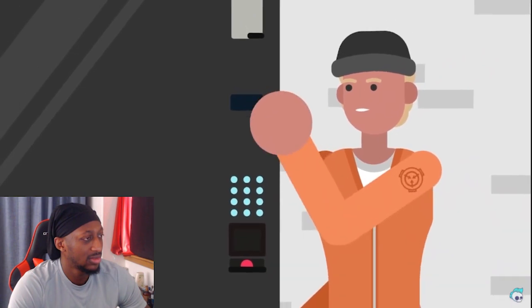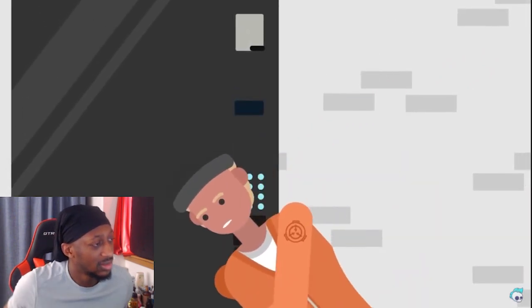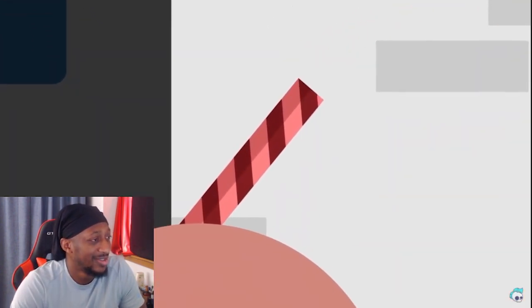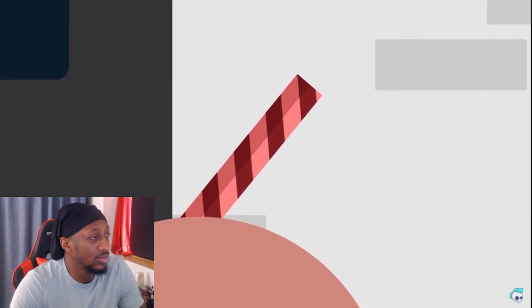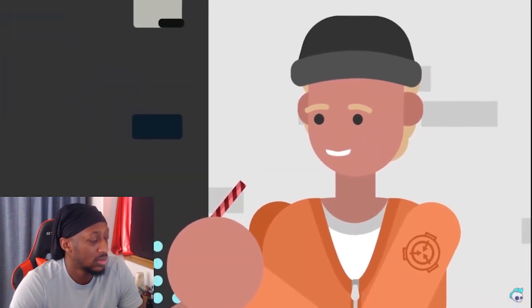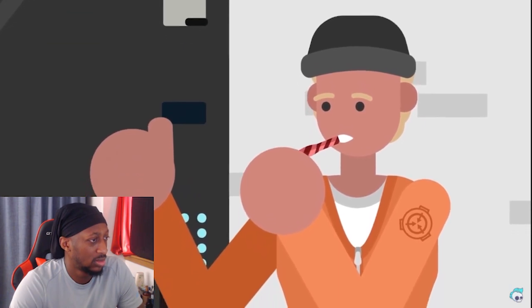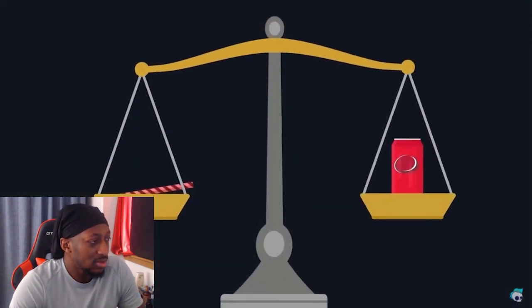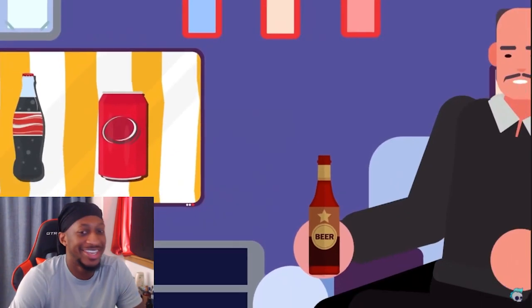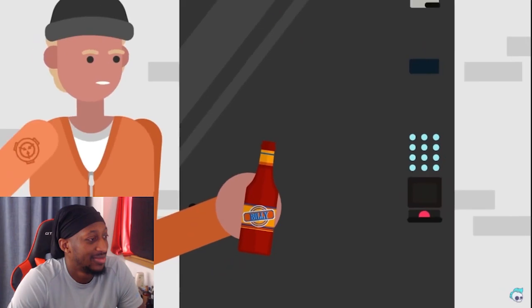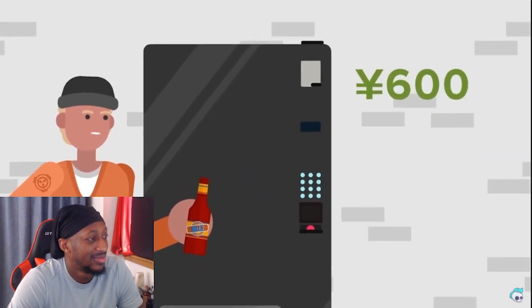But not everybody likes cola. Maybe you prefer Dr Pepper. In which case, maybe the vending machine will furnish you with an interdimensional Japanese product known as Dr Pepper's Amusing Straw. This spatial anomaly tucked inside a whimsical Dr Pepper branded straw seems to contain far more liquid than should be able to fit in the straw - about one bottle's worth of soda to be precise.